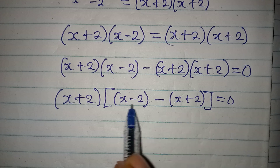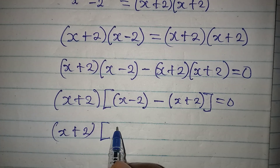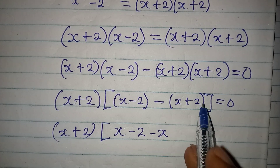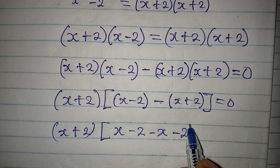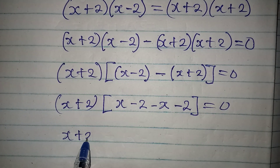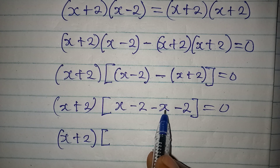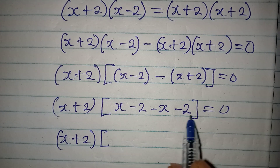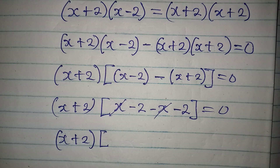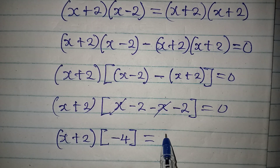Now I want to deal with what I have in the second bracket. x plus 2 is the common factor, then inside the bracket: x minus 2, then negative opens to give negative x and negative 2. Collecting like terms: x minus x gives zero, so we don't have x in the bracket. Then minus 2 minus 2 gives minus 4, and this will be equal to zero.